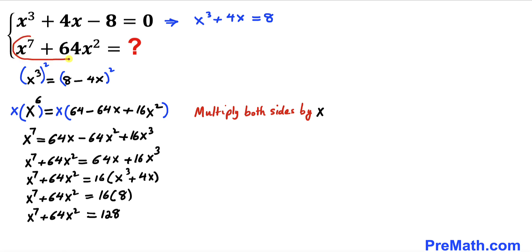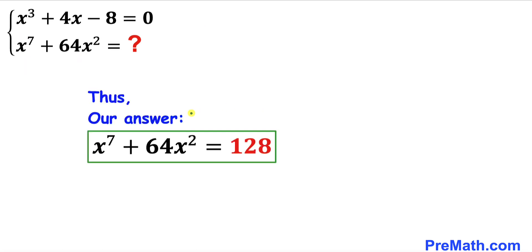16 times 8 equals 128, so the value of x⁷ + 64x² is 128. That's our final answer. Thanks for watching and please don't forget to subscribe to my channel for more exciting videos. Bye!